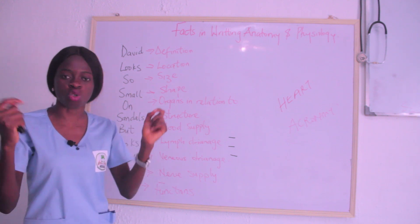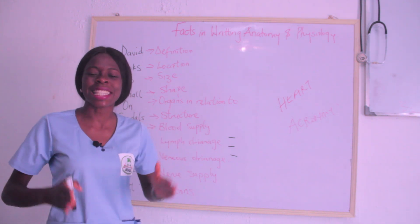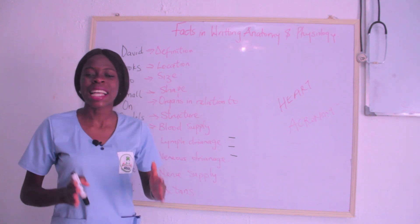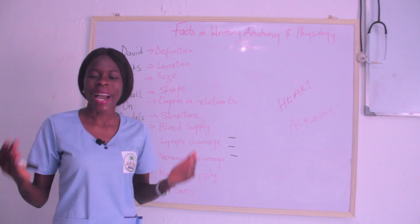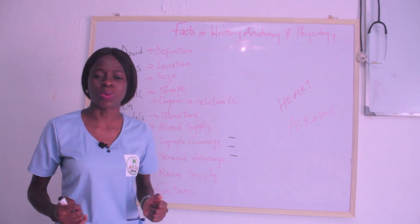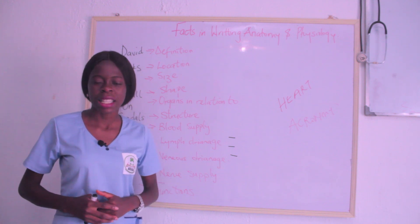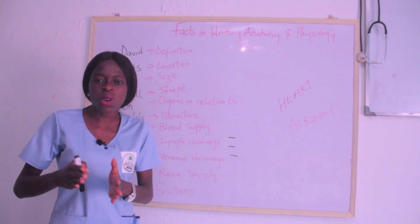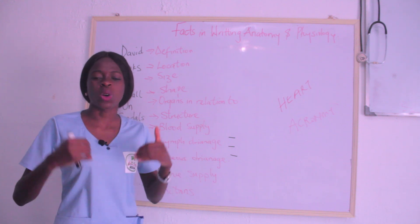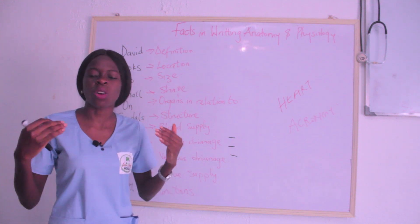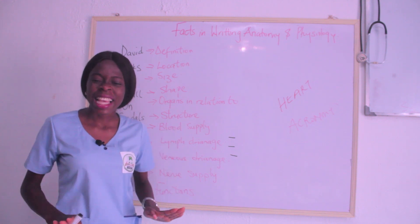Then S stands for Structure. When you talk about the heart in detail, you tell us that the heart has three layers: the pericardium, the myocardium, and the endocardium. The pericardium is the outermost layer, the myocardium is the middle layer, and the endocardium is the innermost layer of the heart.